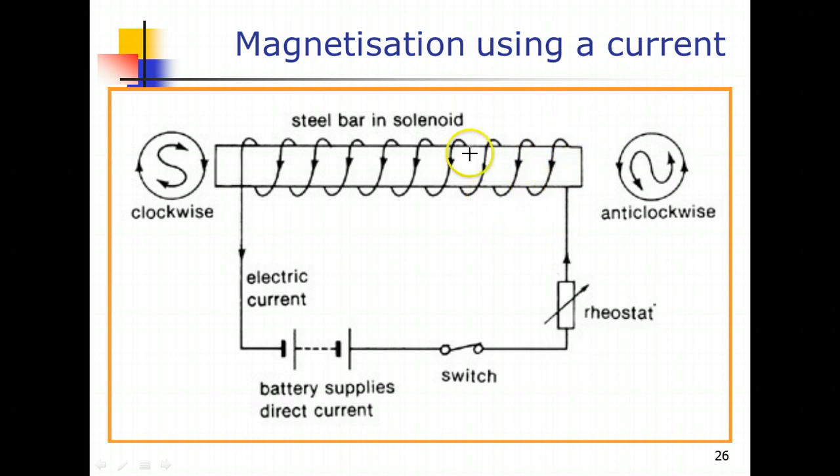So by having a stronger magnetic field, we are able to magnetize magnetic material. This is a typical circuit of how we actually magnetize a magnetic material. For this case, it's a steel bar, and it will be important for you to take note how to draw this particular circuit.